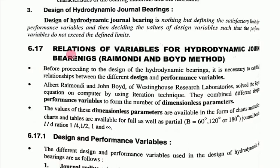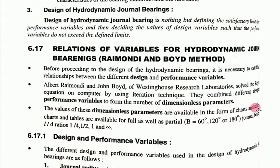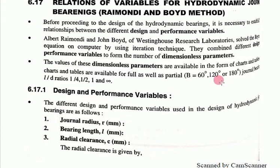Now let us look at the relation of variables for hydrodynamic journal bearing. This is called the Raimondi and Boyd method. Raimondi and Boyd established the relationship between the different design and performance variables. They have a chart which shows the relationship between these variables, and the values of dimensionless parameters are available in the form of charts.